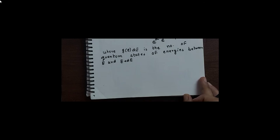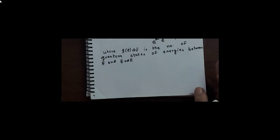Photons have energies. When they collide with the walls, the wall absorbs them and re-emits photons. Higher energy photons are absorbed, and lower energy photons are liberated. In this process, the number of photons emitted will not be the same as those absorbed.